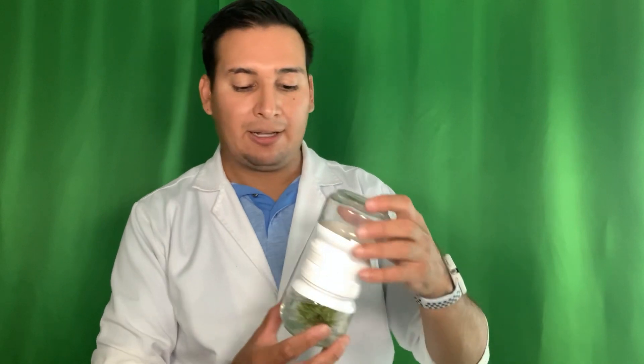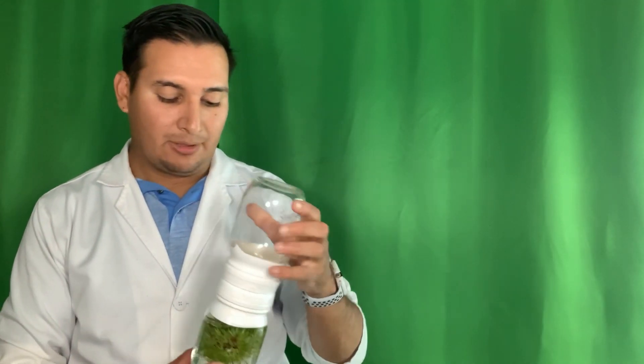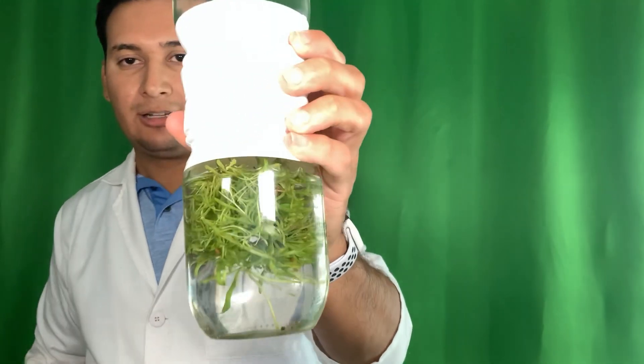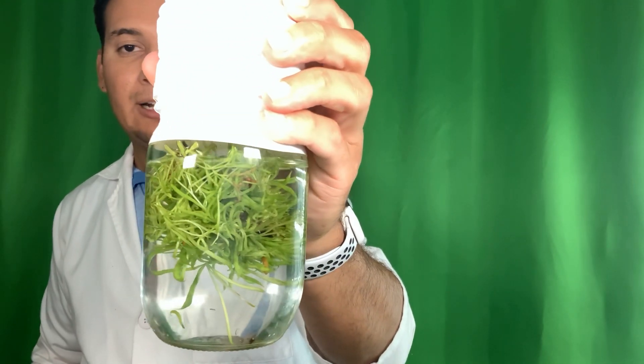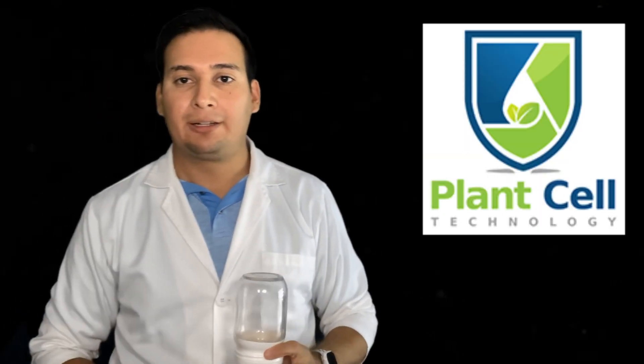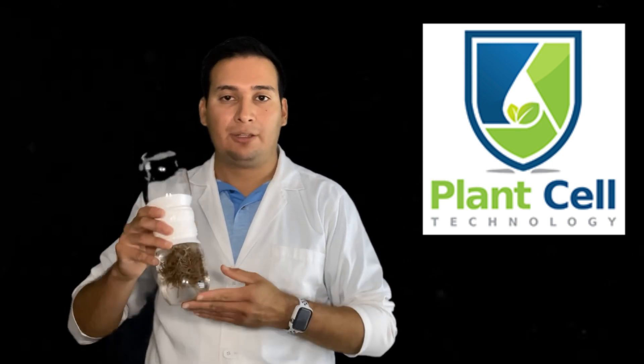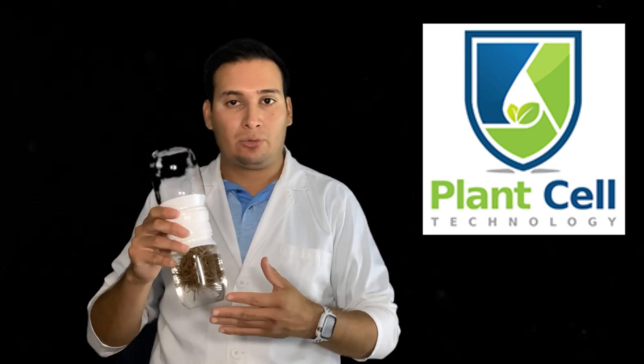I also have plants like Heliamphora minor which is also doing very well, and of course one of the plants that has done very well for me is the Darlingtonia californica. You saw I started with very small plants and they are doing great. Now if you want to check the progress of these plants, all the testing I've been doing for the past couple of months, make sure to subscribe to the channel.